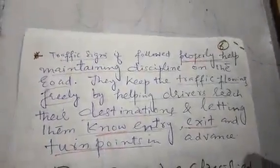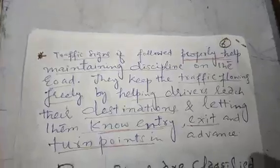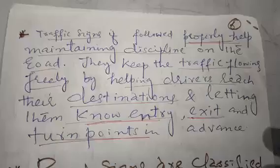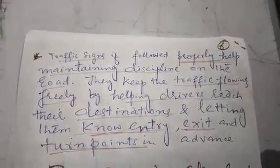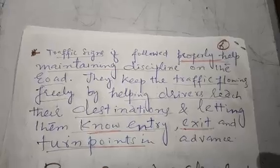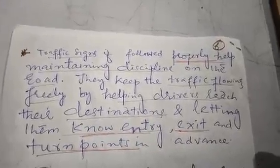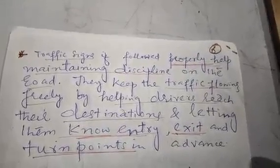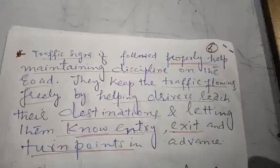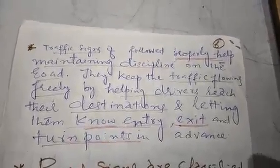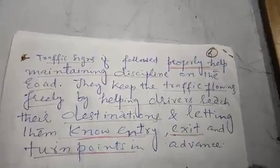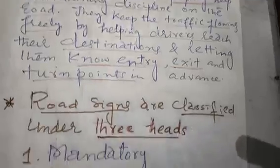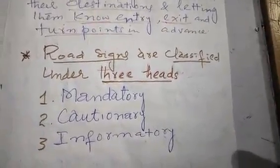If traffic signs are followed properly, they help maintain discipline on the road and reduce accidents. They keep traffic flowing freely by helping drivers reach their destinations, and by letting them know entry points, exit points, and turning points in advance — including U-turns and blind curves, indicating which direction to go.